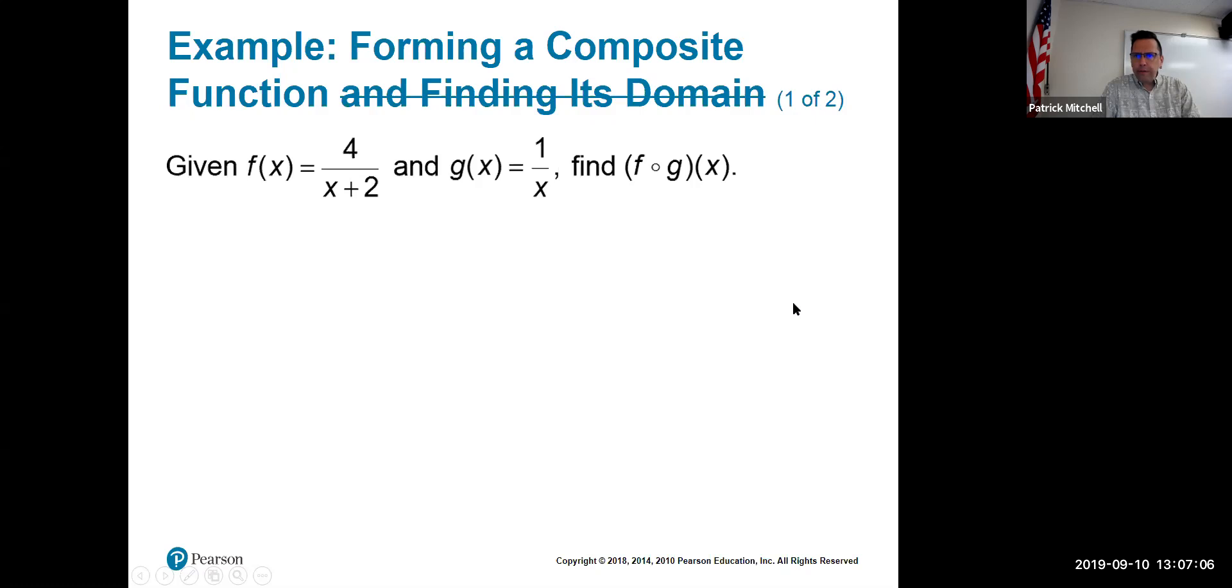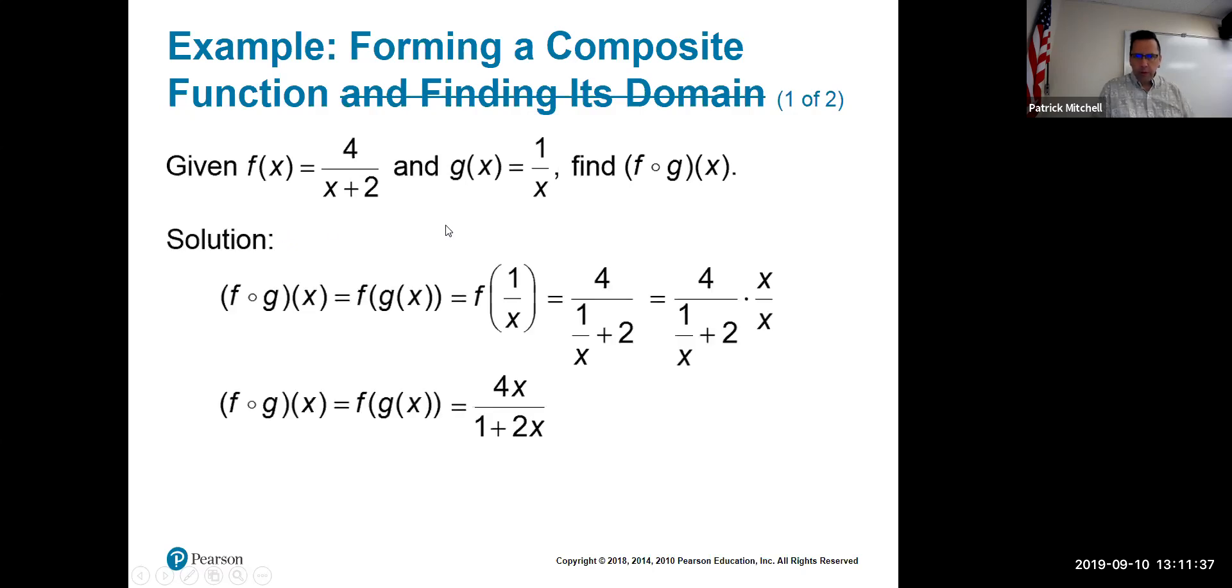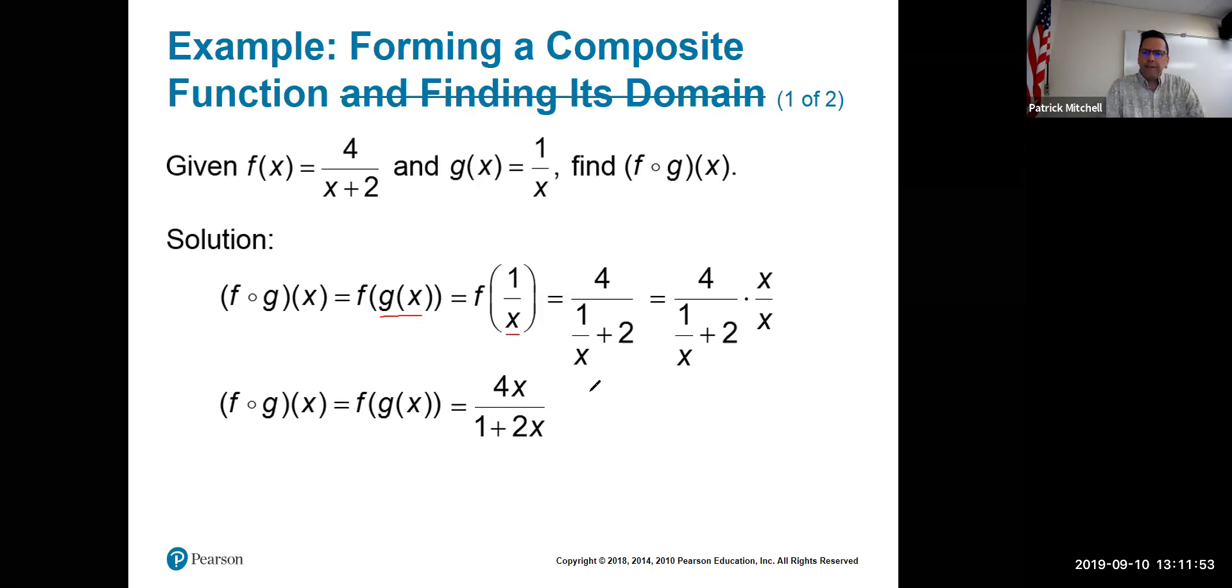That brings us to our next example of forming a composite function. We're given these two functions. F of X equals 4 over X plus 2. And G of X equals 1 over X. They want me to find F circle G of X. This might be a good one for those of you watching the video to pause the video and try this one first. This one is, I'd say, quite a bit more complicated than the last one. But try it and see how you do and we'll compare notes. Hopefully you had a chance to try that. Let's see how it looks. I think this is another one of those where it just all comes up at once. So let's see what we have.